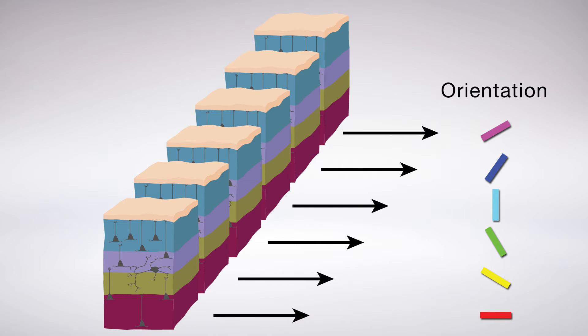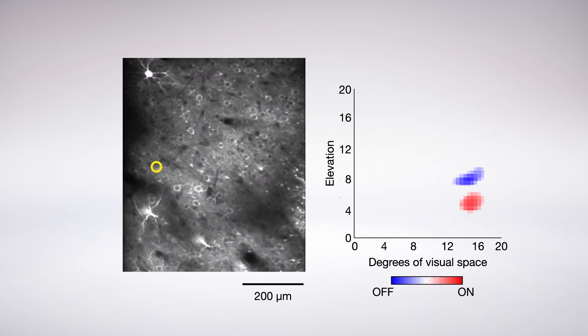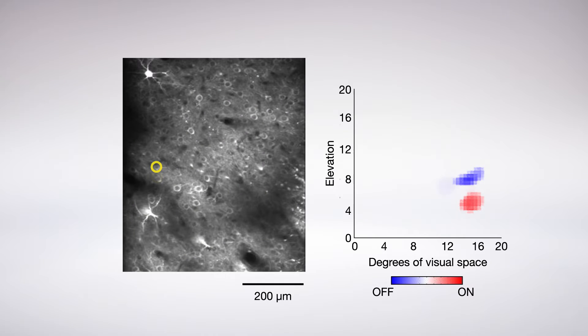To find out how these different mapping systems come about at the same time in the same cells, researchers used an advanced imaging technique to view the on and off response regions in hundreds of individual cortical neurons in the tree-shrew brain.